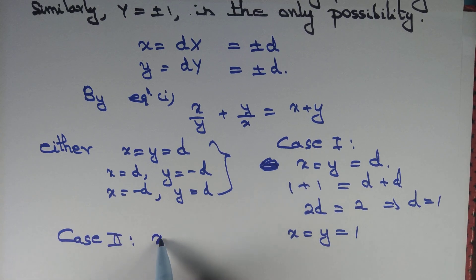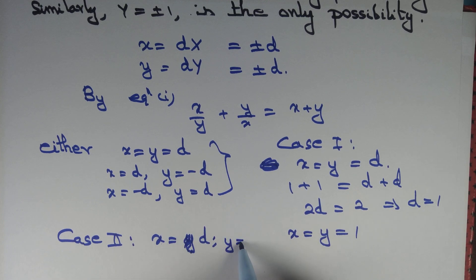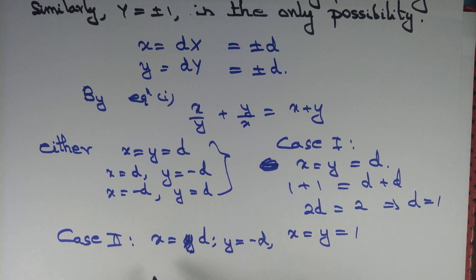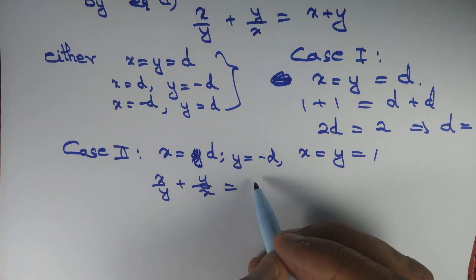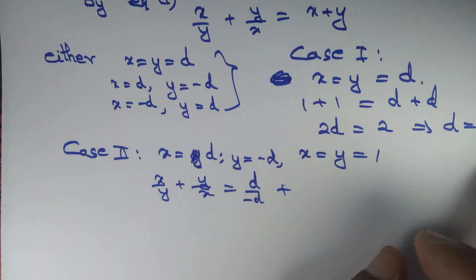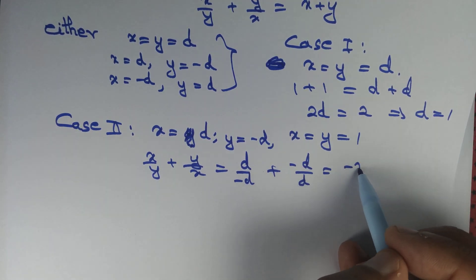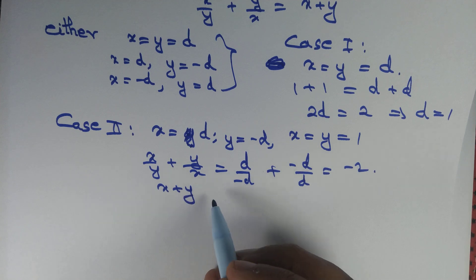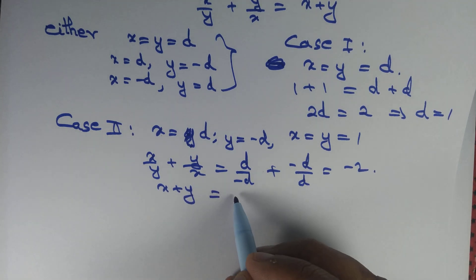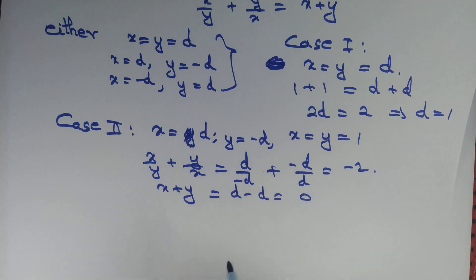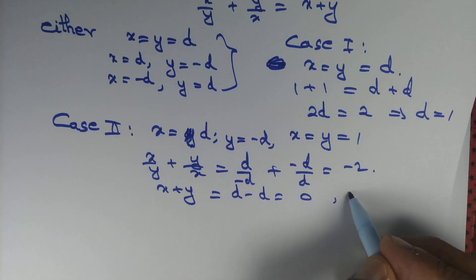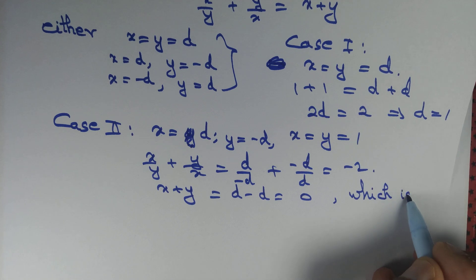Case 2: x = d and y = −d. In that case x/y + y/x = d/(−d) + (−d)/d = −2, but x + y = d − d = 0. These are not equal, so this case is not possible.